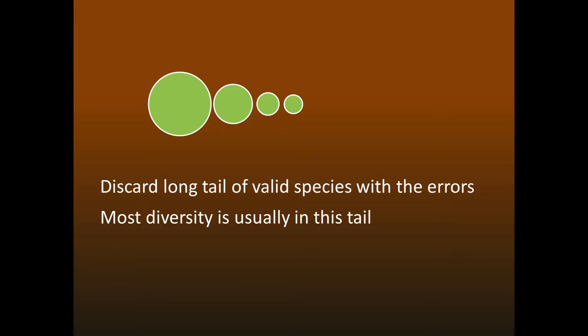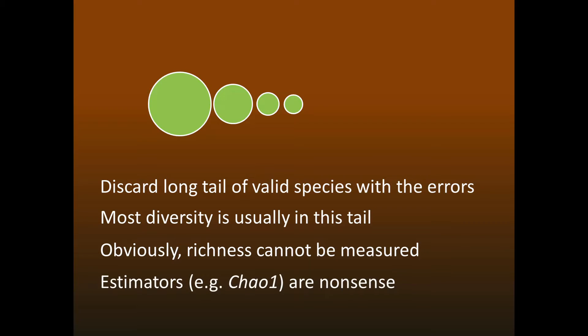Either way, it's obvious that you can't measure richness, which is the number of species or OTUs in your sample. And it's also obvious that you can't use estimators such as Chao-1 to extrapolate to the full diversity of the ecosystem, because these estimators need reliable abundances of detected rare species.